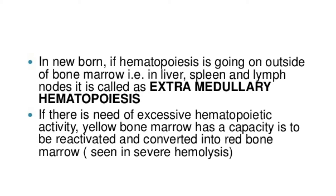What is extramedullary hematopoiesis? In newborns, if hemopoiesis is going on outside of the bone marrow — in the liver, spleen, and lymph nodes — it is called extramedullary hemopoiesis. As an individual grows and in adulthood, the rate of blood cell formation decreases.